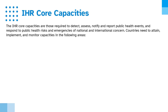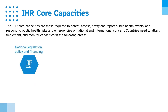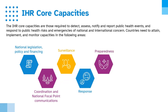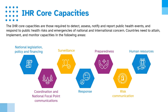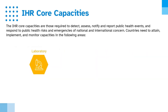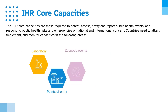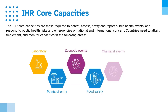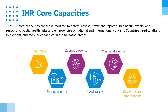Countries need to attain, implement and monitor capacities in the following areas: national legislation, policy and financing; coordination and national focal point communications; surveillance; response; preparedness; risk communication; human resources; laboratory; points of entry; zoonotic events; food safety; chemical events; and radio nuclear emergencies.